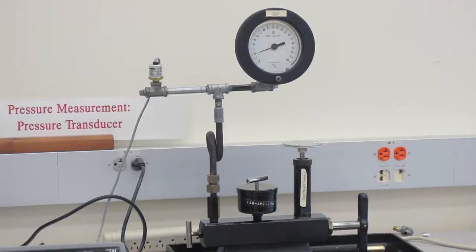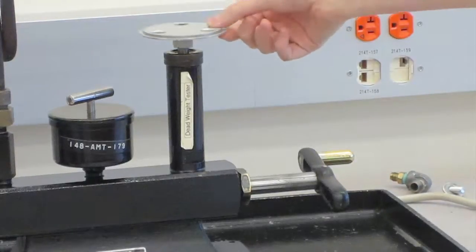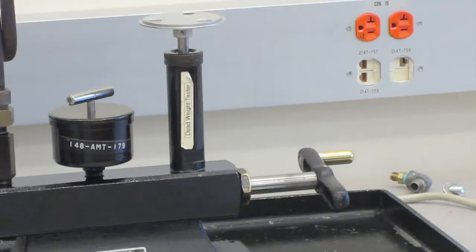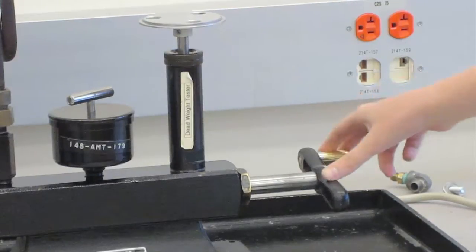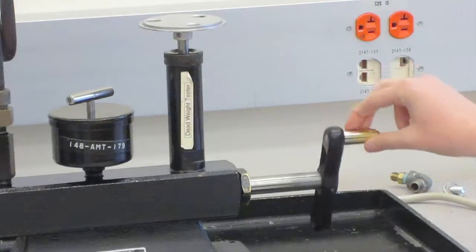You can see that the platform is in equilibrium position between the top and the bottom of its travel. If the weight platform moves to the extreme bottom or the top of its travel, then you need to slowly adjust the hand wheel until it is in the equilibrium position.